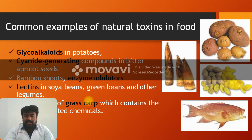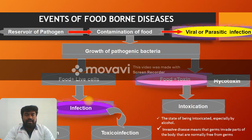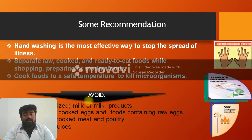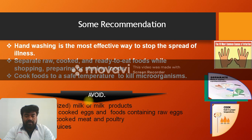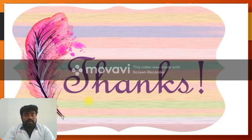Acetic acid toxin is produced by dinoflagellate organisms. Common examples of natural toxins in food include glycosides, cyanide-generating materials, and bamboo shoots. Foodborne diseases involve a reservoir of pathogens, contamination of food, and a route of infection entering the body. To avoid food poisoning, the main recommendations include proper hand washing, consuming properly cooked food, avoiding raw milk and milk products, and avoiding raw eggs.